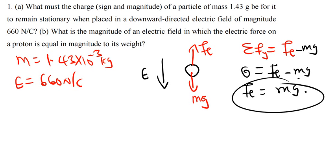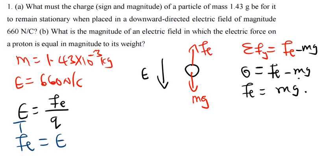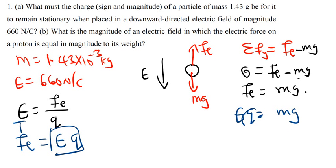The electric field is also given by the electric force divided by the charge: E = Fe / Q. We have been given the electric field, but we want to find the charge. So we make the electric force the subject: Fe = E × Q. We replace Fe with E × Q in our equation: E × Q = mg. Dividing both sides by E gives us Q = mg / E.